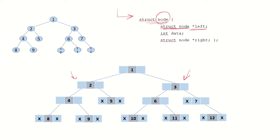So we have a struct node pointer left, then some data — assuming integer data, so an integer data field — and a struct node pointer to the right node as well. So if we have a tree like this, how is it going to be represented as a linked list?